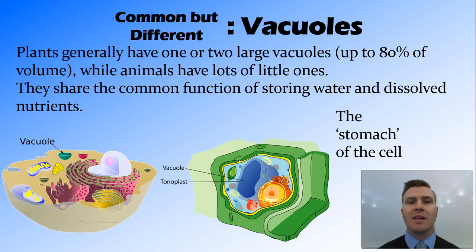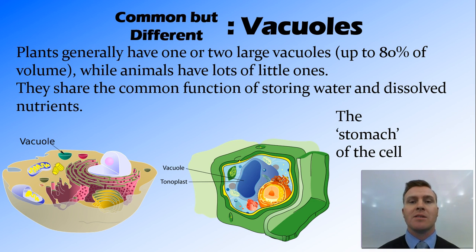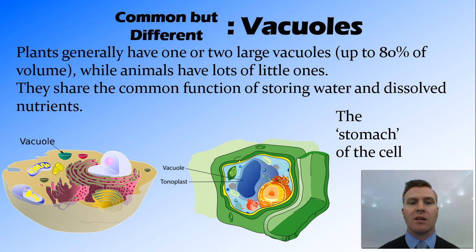Vacuoles are present in both plant and animal cells, but they're fairly different in the way they appear. In a plant cell, you'll have one or two vacuoles, and they take up most of the volume of the cell — in some cells this can be 80 or 90%. Animal cell vacuoles, on the other hand, have lots of little vacuoles. The basic function is the same: they're like the stomach of the cell, storing things like water, dissolved nutrients, as well as wastes that need to be expelled. This difference will be visible under the light microscope.